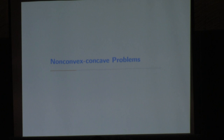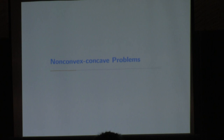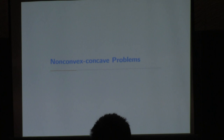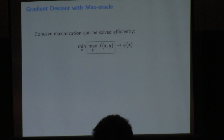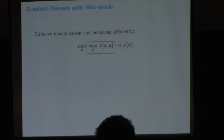This talk focuses on two scenarios. First, a simpler case generalizing convex-concave to non-convex on one side and concave on the other. This has a big advantage: since the maximization problem is concave, the inner max can be solved efficiently by gradient ascent, accelerated gradient ascent, or any algorithm. We denote this maximization function value as phi(x).